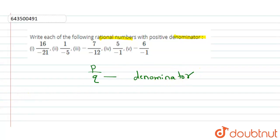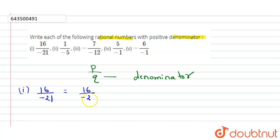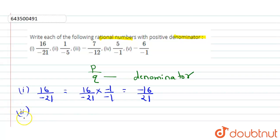We need to convert it into a positive format. First, we are checking: the first number given to us is 16 upon minus 21. We can write it as 16 upon minus 21 multiplied by minus 1 upon minus 1, and we get minus 16 upon 21. Our denominator is converted into a positive term.